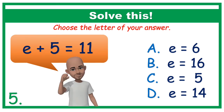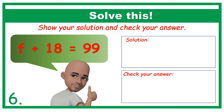Number 6. Solve this. F plus 18 equals 99. Show your solution and check your answer.